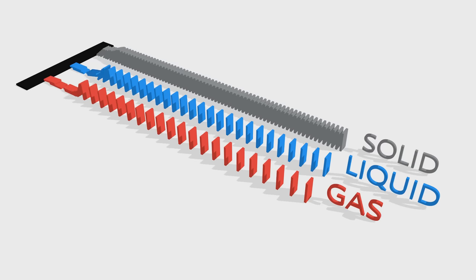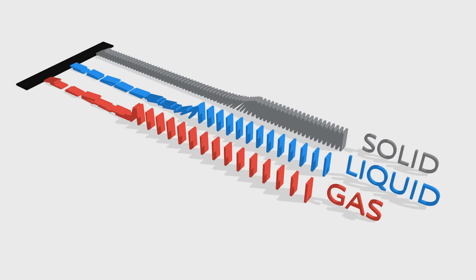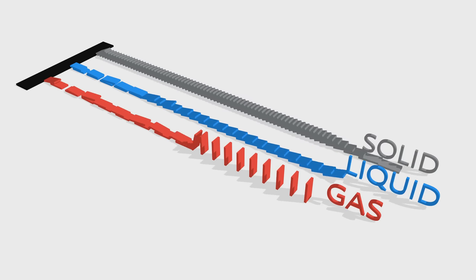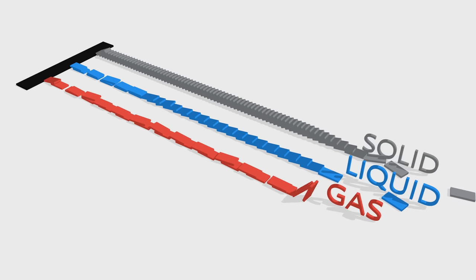We can represent a sound wave propagating with dominoes. Because the molecules, or dominoes, are very close together, they can collide quickly. And therefore, the wave travels faster.